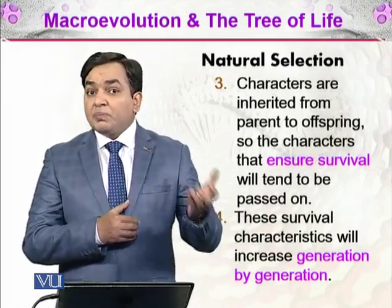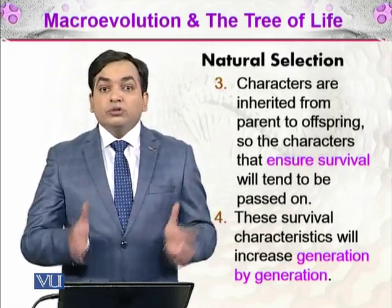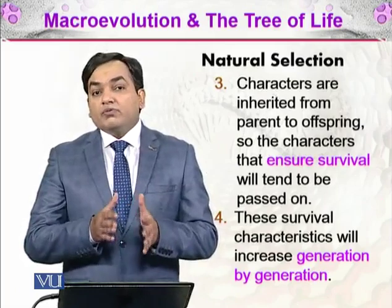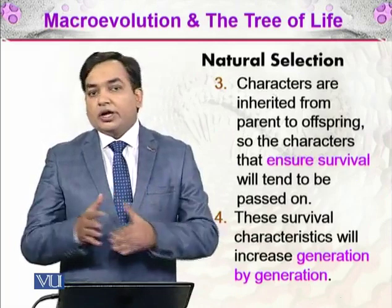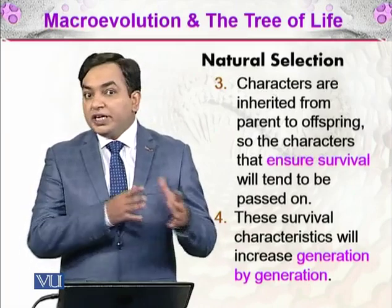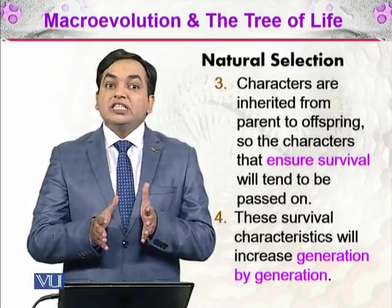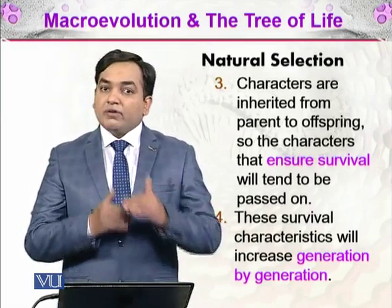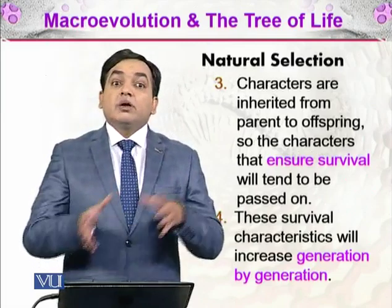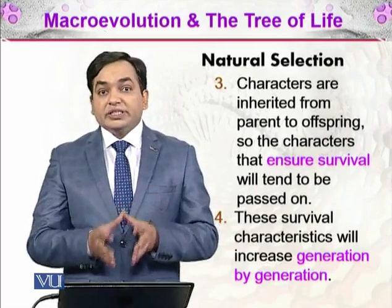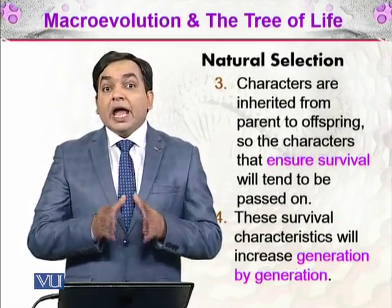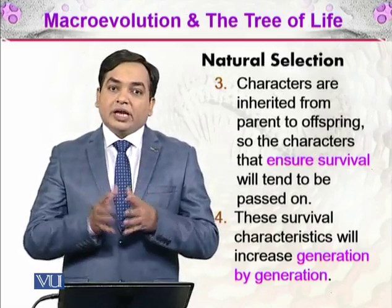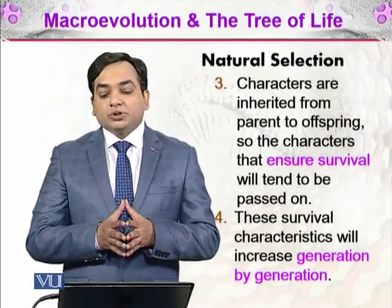For example, a cheetah chasing an impala will evolutionarily adapt to become more vigilant and more able to run. But there is a limitation — it won't run at terminal speeds because its body capabilities will limit its run, but it will run to its biological limits. Evolution will evolve an organism to its biological limits. These were Darwin's ideas of evolution by natural selection, and these gave rise to a new science called neo-Darwinism, which we will discuss in later lectures.